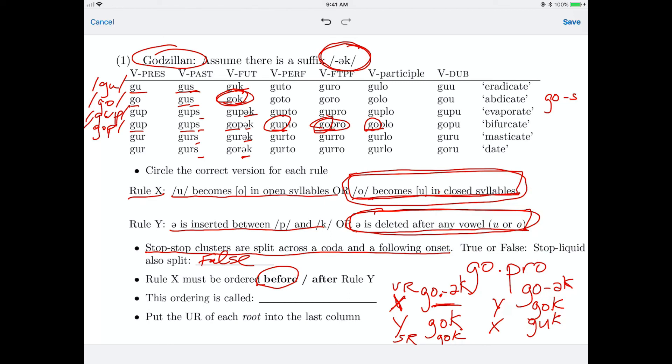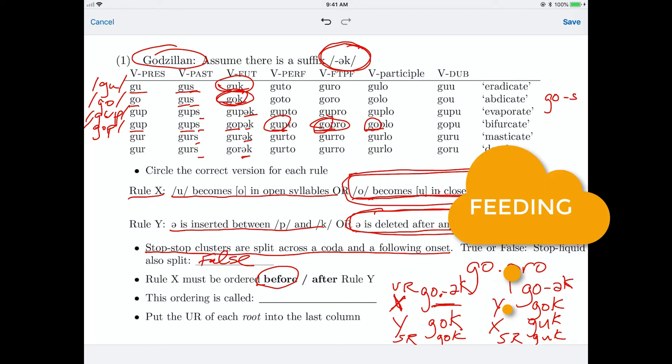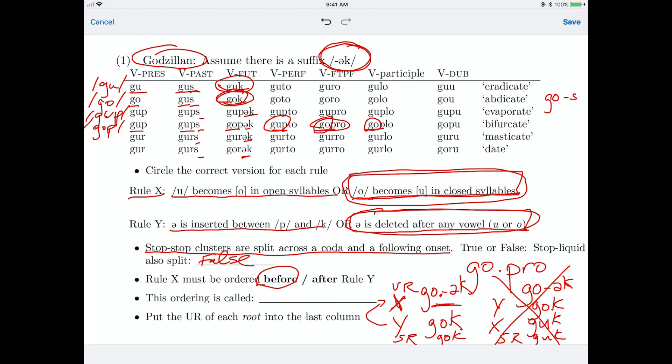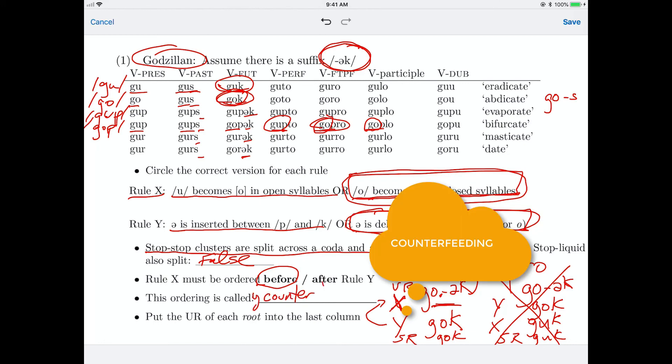Now this would be in a closed syllable, and we apply rule x, and we would have gotten G-U-K. Right? And it would have merged with, it would have come out homophonous with this form. And that would give us G-U-K. That would be the wrong output. But what you could see, what happened is, the vowel deletion rule created the closed syllable here, turned this into one closed syllable, and so that the O-U rule could apply. So that would have been feeding. Y would have fed x. So since that's the wrong order, we don't want that feeding order. The right order is for y to come after x, so we would say that y counterfeeds x.